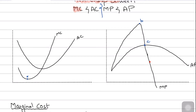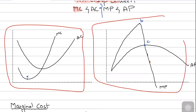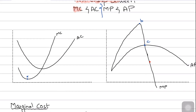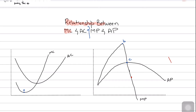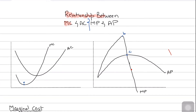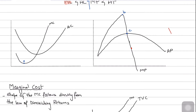If you analyze both graphs and compare them, they are basically mirror images of each other. If you invert or reverse the product graph, it becomes the cost graph. The concept behind both is the same — in fact, the reasons for the shapes are also the same, and that is simply due to the law of diminishing marginal returns.